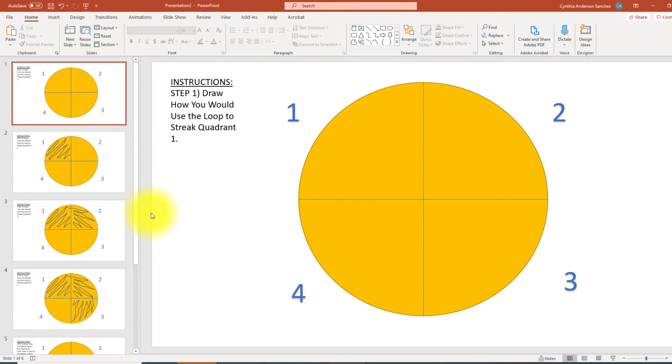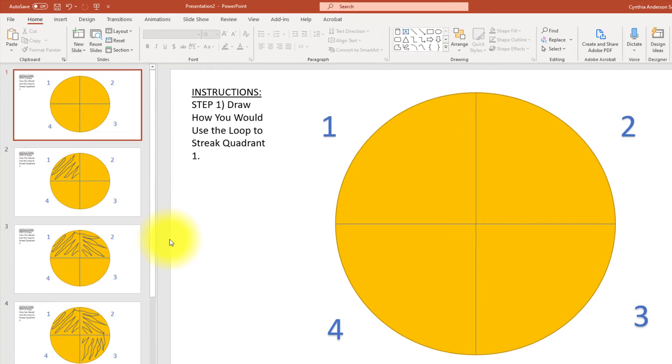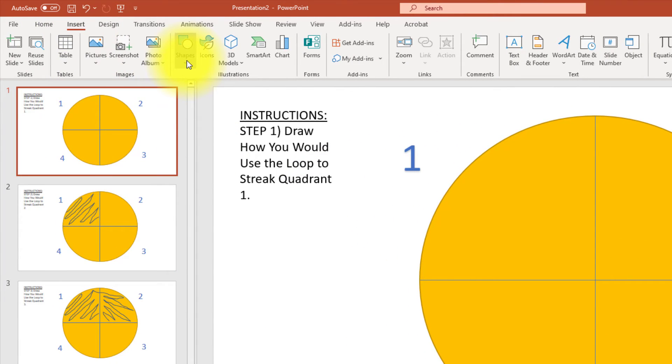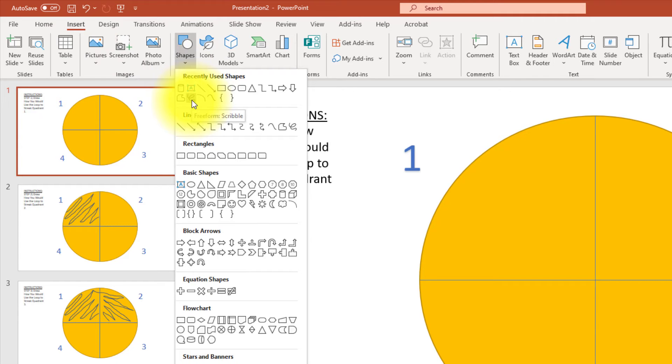For this laboratory activity, you will need to open up the PowerPoint provided. Step one, draw how you would use the loop to streak quadrant one. In order to do this, go to Insert, Shapes, Scribble.